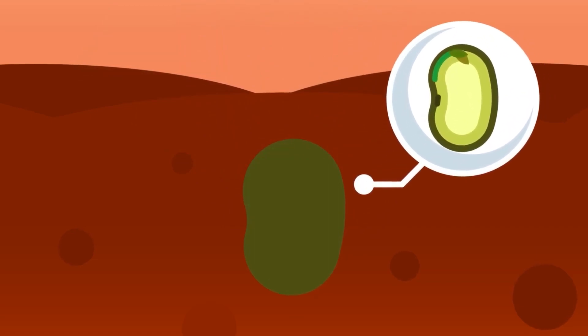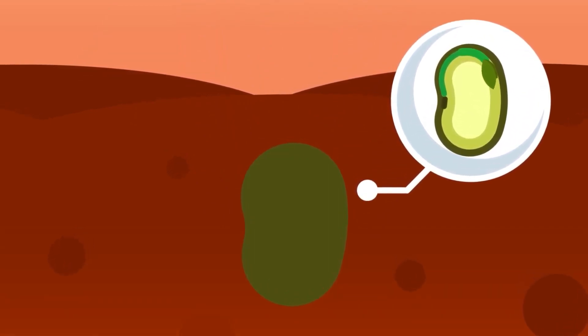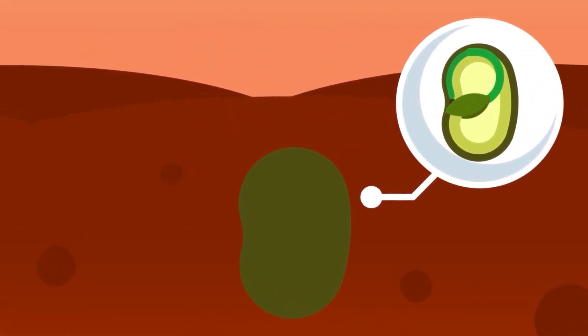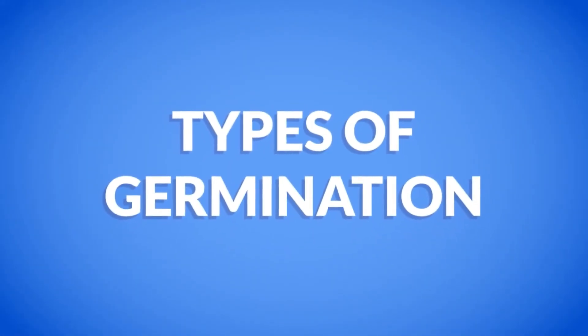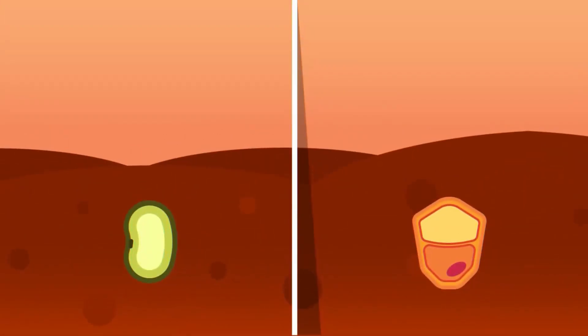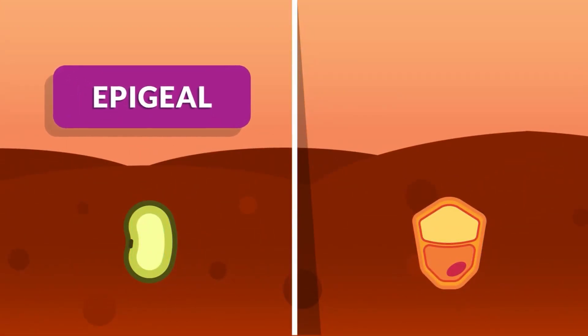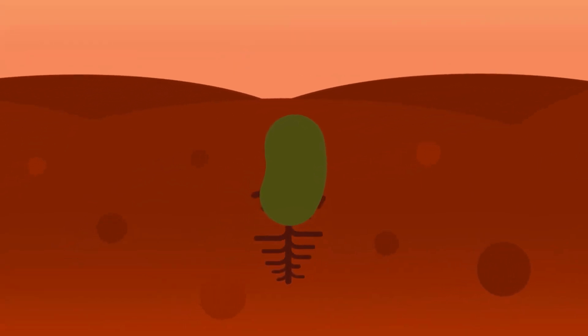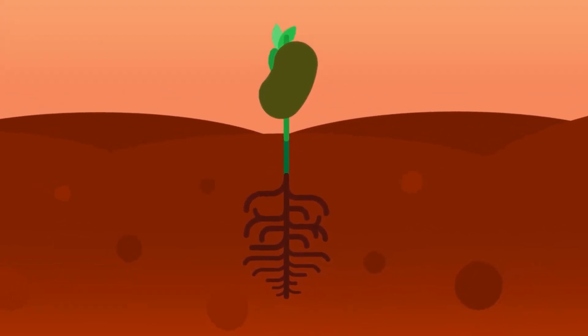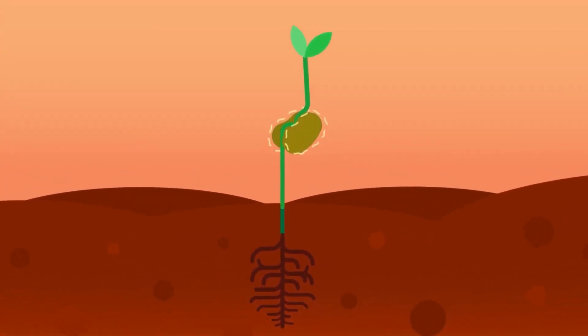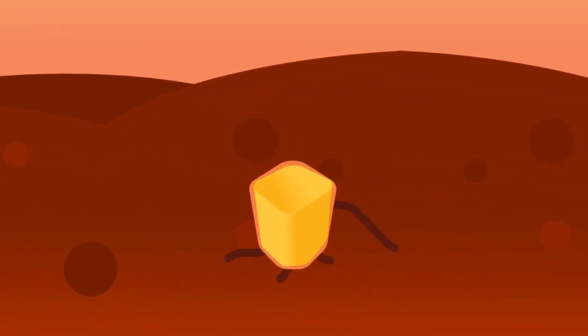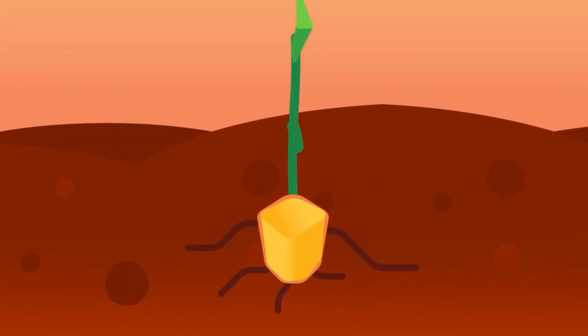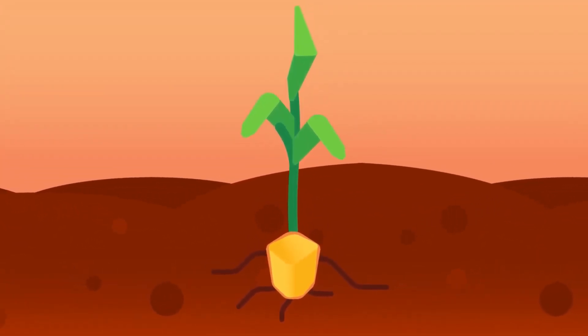These activities continue until the seedling can make its own food by the process of photosynthesis. Types of germination: There are two types of germination, epigeal germination and hypogeal germination. In the case of epigeal germination, the cotyledons are carried above the ground, for example, sword bean seed. While in the case of hypogeal germination, the cotyledons remain below the surface of the soil, for example, maize and broad bean.